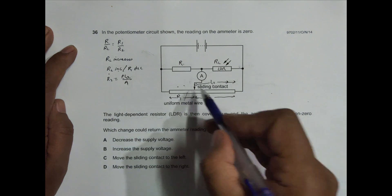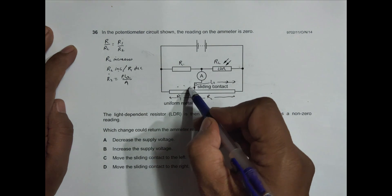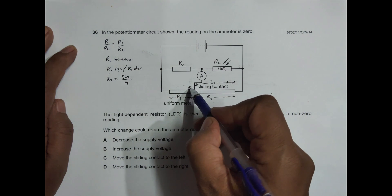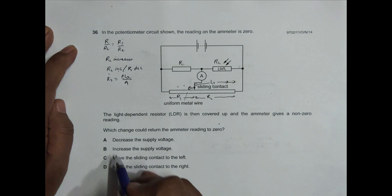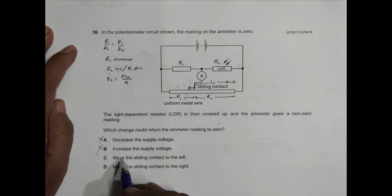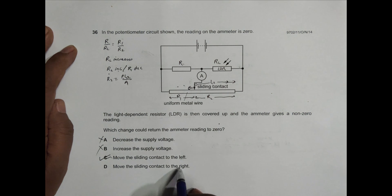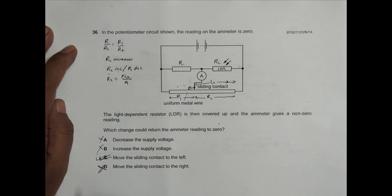To increase L2, we need to move the slider here. The slider should be moved to the left. Going through the answer choices, moving the sliding contact to the left is correct — that is choice C. Moving it to the right is incorrect. Choice C is the correct answer.